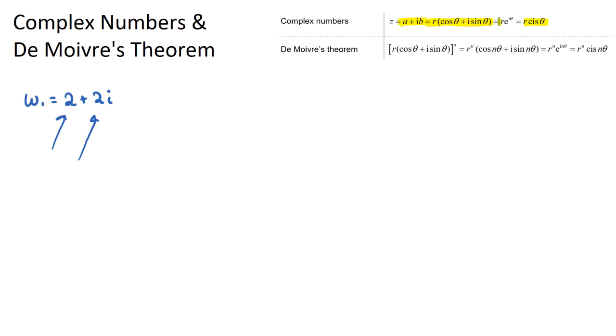This last one here is called polar form, or you might see it as Euler's form. This is also a way of writing a complex number but not as commonly seen as the other two.